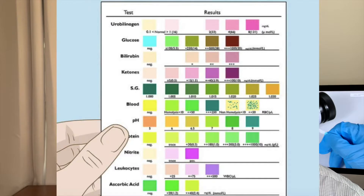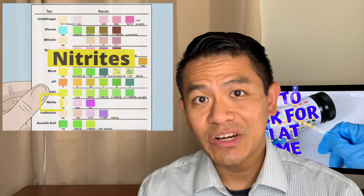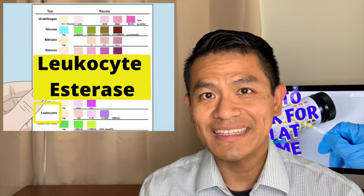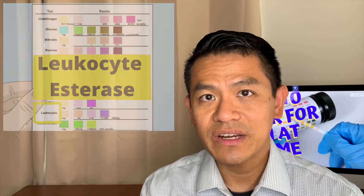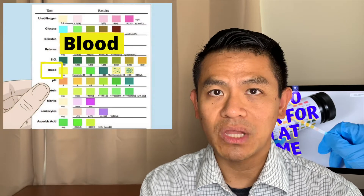There are 10 parameters on this test strip, but there are really only three that I care about when trying to check for a urinary tract infection. One is nitrates, two is leukocyte esterase, and then the third one is blood.